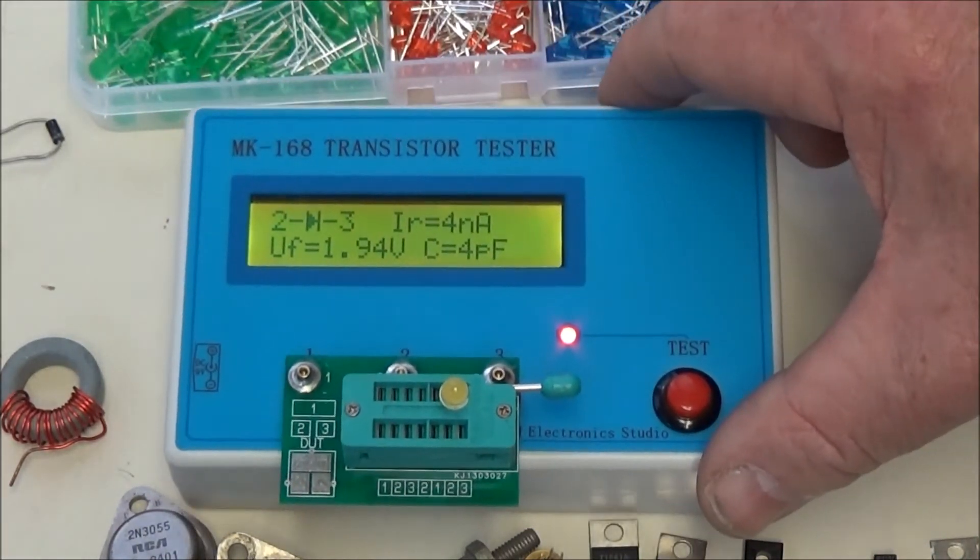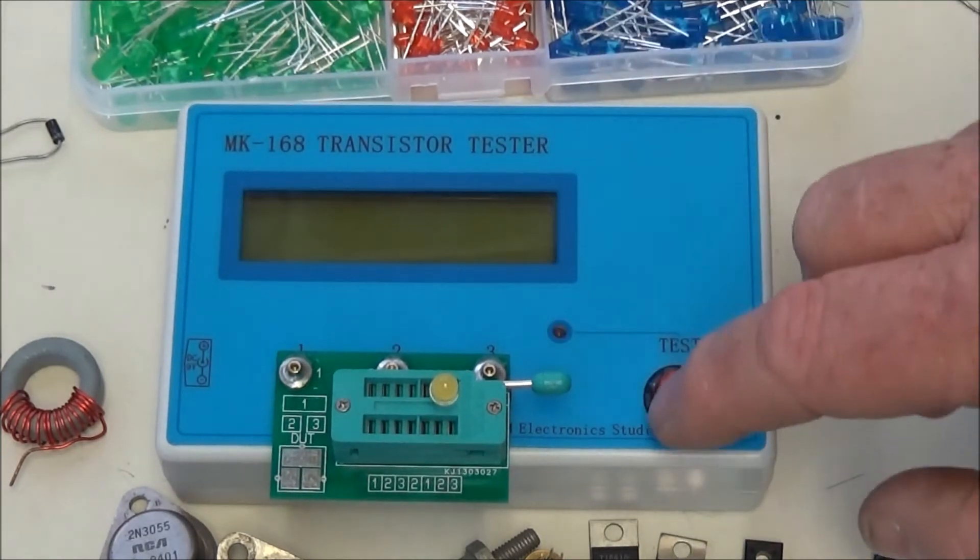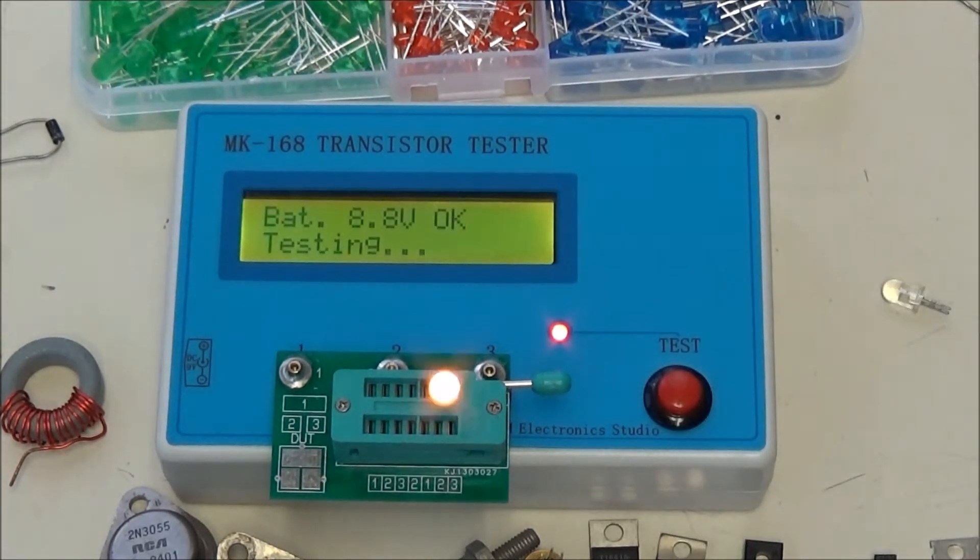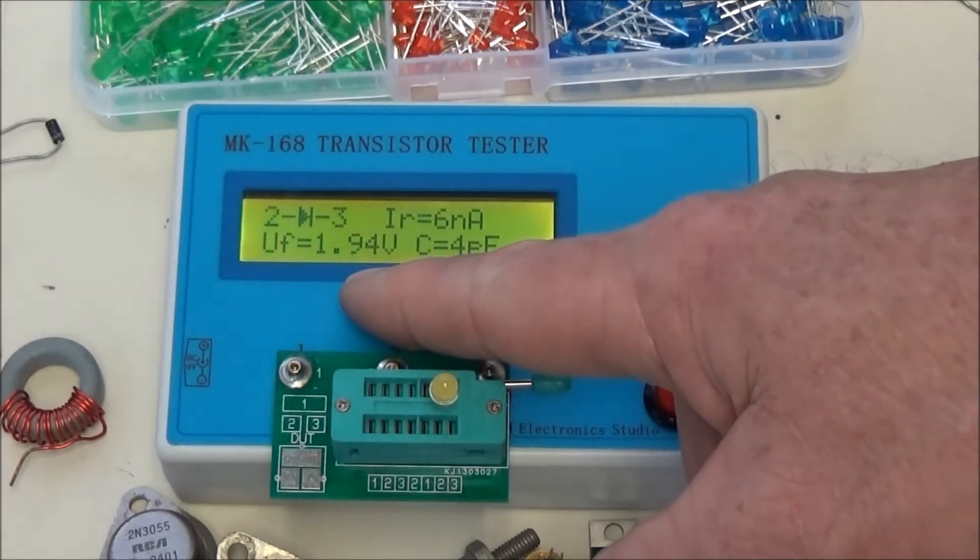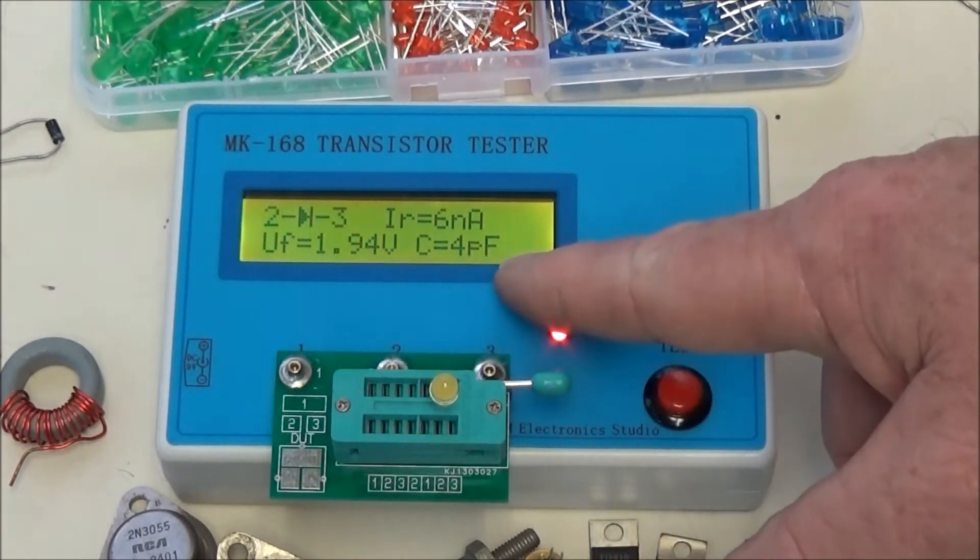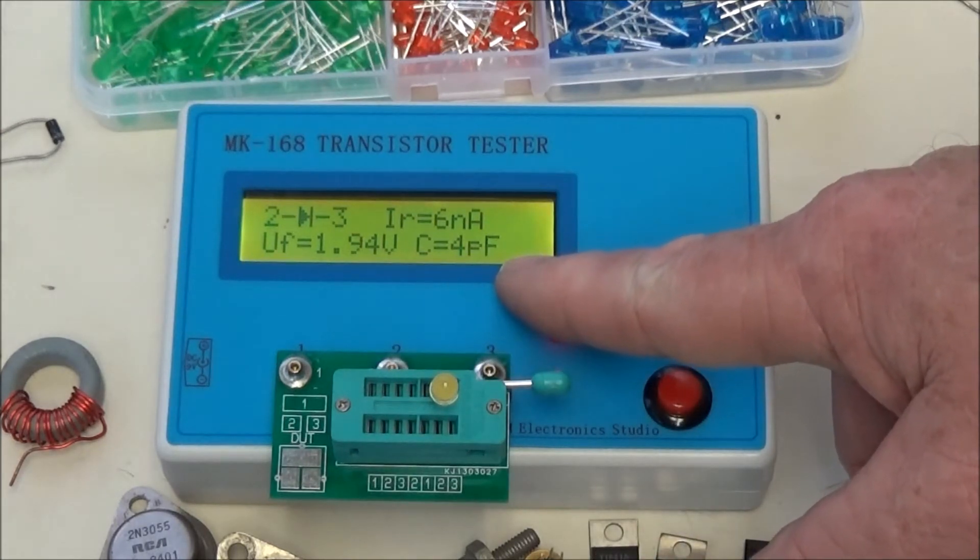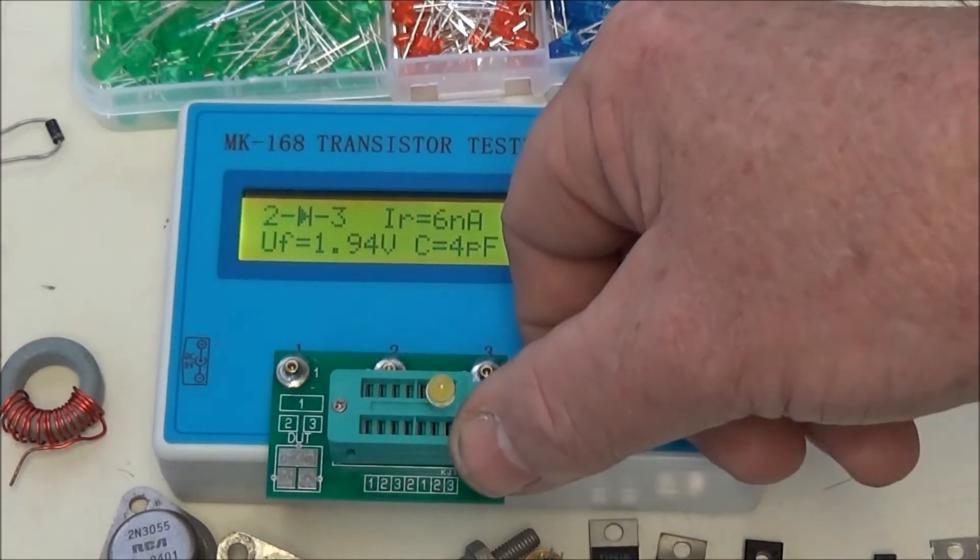So, this diode has a voltage drop. If you wait too long, it'll go off on you, so hit test again. It has a forward voltage of 1.94 volts and a capacitance when reverse biased of 4 picofarads.